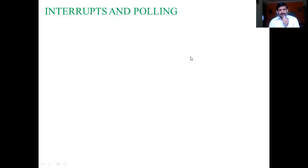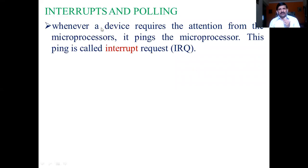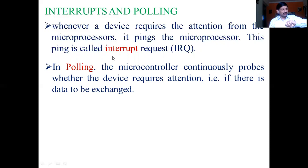Interrupts and polling — generally, interrupts means disturbances. When I want to teach this topic, I may get interrupts because of health problems; those are internal interrupts. Or I may get interrupts from external resources; those are external interrupts. Whenever any input device or additional device requires attention from the microprocessor, it pings the microprocessor — this ping is called an interrupt request. Polling means continuously checking.